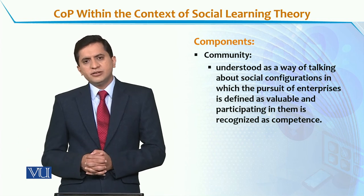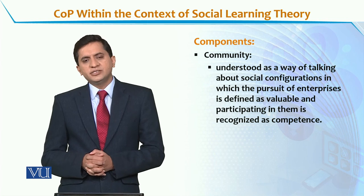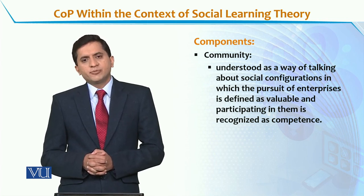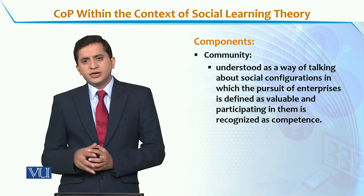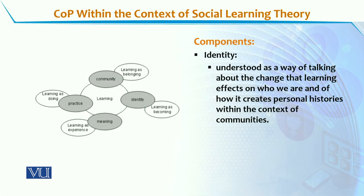When we become part of the community of practice, we have an understanding of community in our minds, and members of the community of practice consider themselves competent to achieve the agenda of the community. Identity is another component within the perspective of social learning theory. Identity is understood as a way of talking about the change that learning affects on who we are and how it creates personal histories within the context of communities. These four components are interlinked: practice is learning as doing, meaning is learning as experience, identity is learning as becoming, and community is learning as belonging.